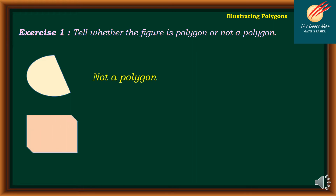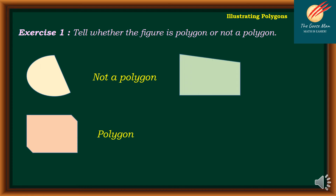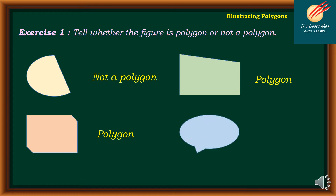What about this one? This is actually a polygon. Next — this is also a polygon because all sides are bounded by segments. And finally, this one is not a polygon because some parts are not bounded by segments.